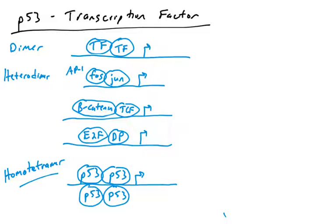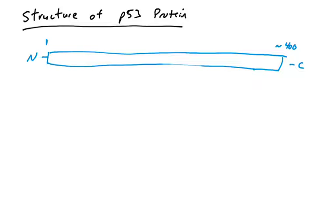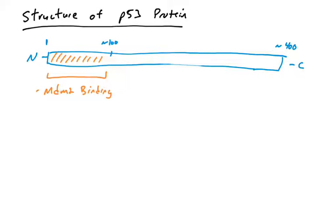Let's explore the structure of the p53 protein before we start talking about mutations. Here I've drawn out the primary structure of p53 from the N-terminus to the C-terminus — p53 is approximately 400 amino acids long. The first 100 amino acids contains two domains. One is the MDM2 binding domain. MDM2 binds to p53 and transfers ubiquitins to it, allowing p53 to be destroyed by the proteasome. So MDM2 interacts with approximately the first 100 amino acids of p53.